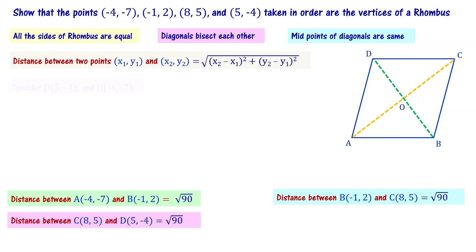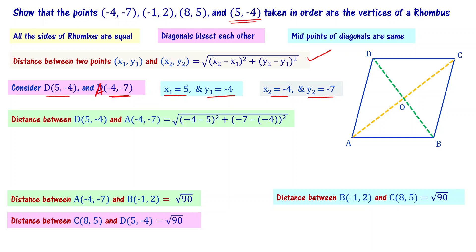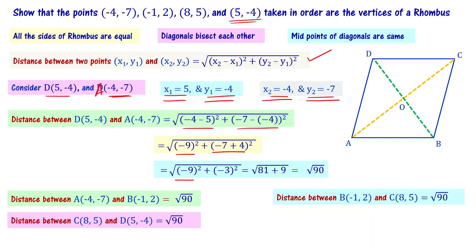Now let's find the distance between D and A. D is 5, minus 4 and A is minus 4, minus 7. With x1 equal to 5, y1 equal to minus 4, x2 equal to minus 4, y2 equal to minus 7: square root of (minus 4 minus 5) whole square plus (minus 7 plus 4) whole square, giving square root of minus 9 whole square plus minus 3 whole square, equal to square root of 81 plus 9, that is square root of 90.